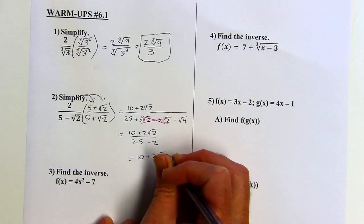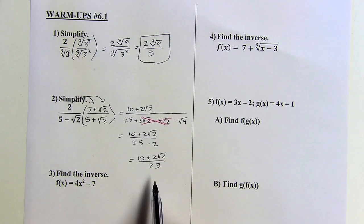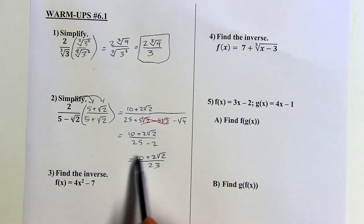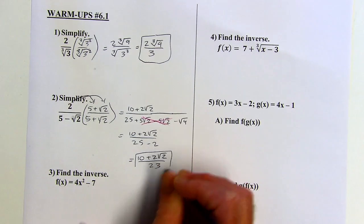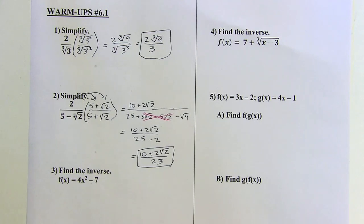So I've got 10 plus 2 root 2 over 23. And then I still want to check to see if I can reduce any more. So I'm looking at the three terms here, but nothing goes into those three terms. Nothing goes into 10, 2, and 23. So I can't reduce that any further. But I don't have a radical in the denominator, so that's considered simplified. All right.